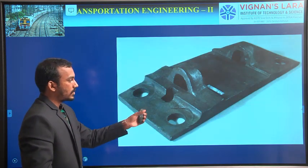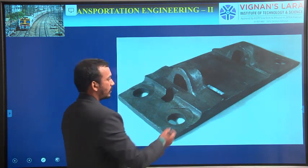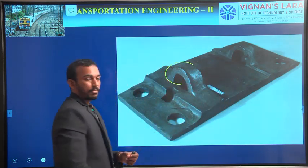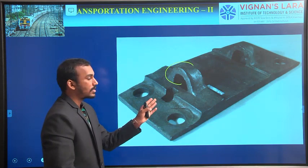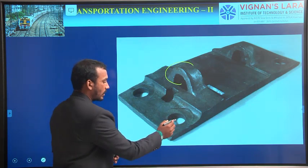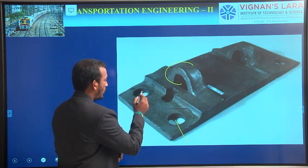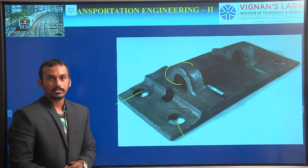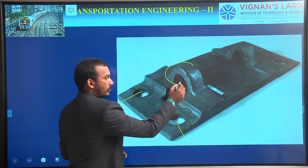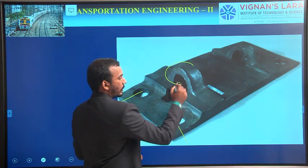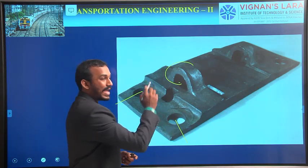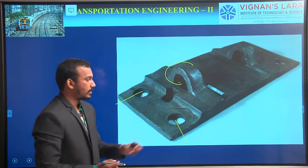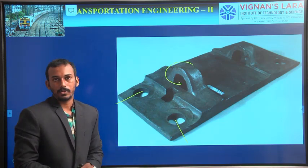This is a bearing plate — these two are holes. For the bearing plates, we use generally elastic spikes. These are the holes for the bolts to connect to sleepers. This one is to connect the flat-footed rails to the bearing plate using an elastic spike, and these two holes are to connect the bearing plate to the sleepers.